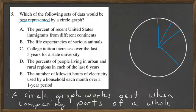So perhaps one piece would be Kenya, just as an example. You'd have other countries and each little piece of the pie throughout. So A works well.